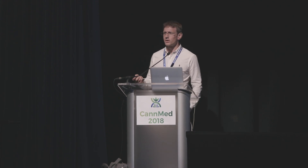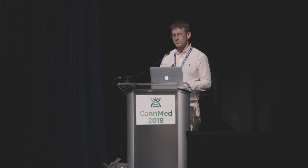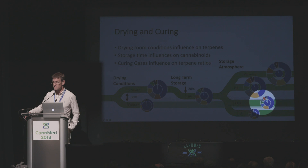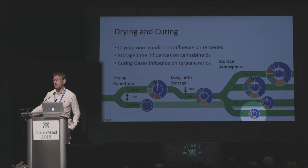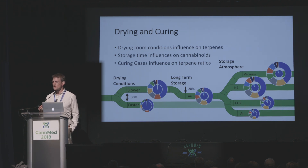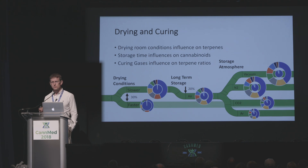We can take that further. Depending on which atmosphere you store the cannabis in, you affect the concentrations of terpenes, the concentrations of cannabinoids, and even the ratio of terpenes. If you change the gases, you change the terpene profile. That is both good and bad. If you want something to be stable, don't change your gases. But if you want an artisan approach to modulate the flavor or the terpene profile, you can do this. You can also use all these aspects to compensate for any variants that might come out from the grow.